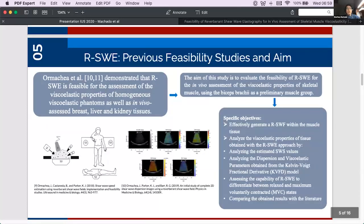So Orman Chet et al. demonstrated that reverberant shear wave elastography is feasible for the assessment of the viscoelastic properties of homogeneous viscoelastic phantoms as well as in vivo-assessed breast, liver and kidney tissues. So the aim of this study is to evaluate the feasibility of RSWE for the in vivo assessment of the viscoelastic properties of skeletal muscle using the biceps brachii as a preliminary muscle group.